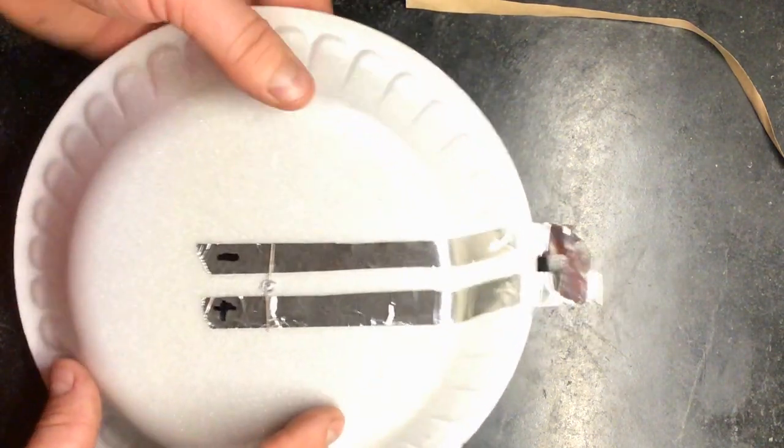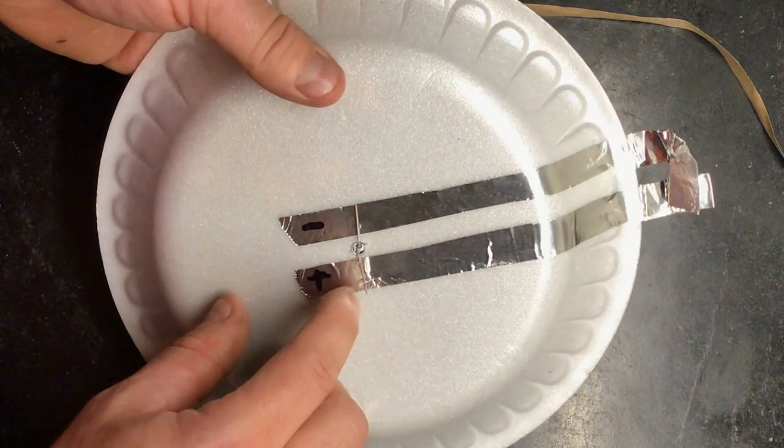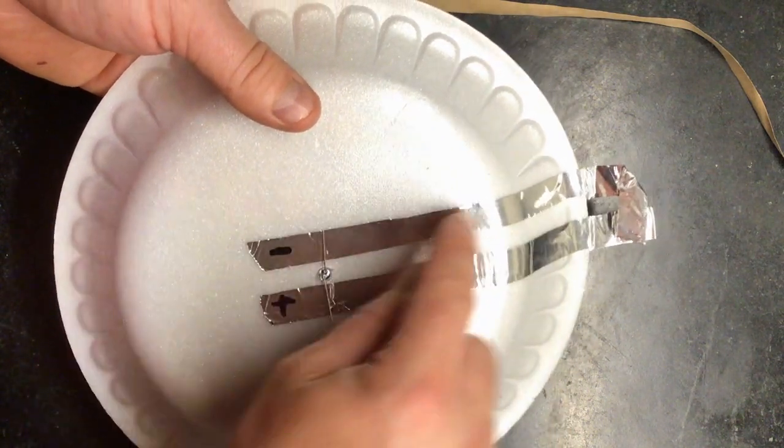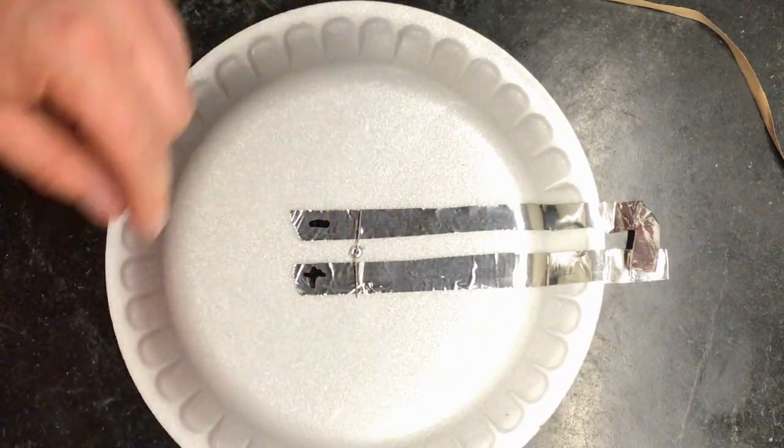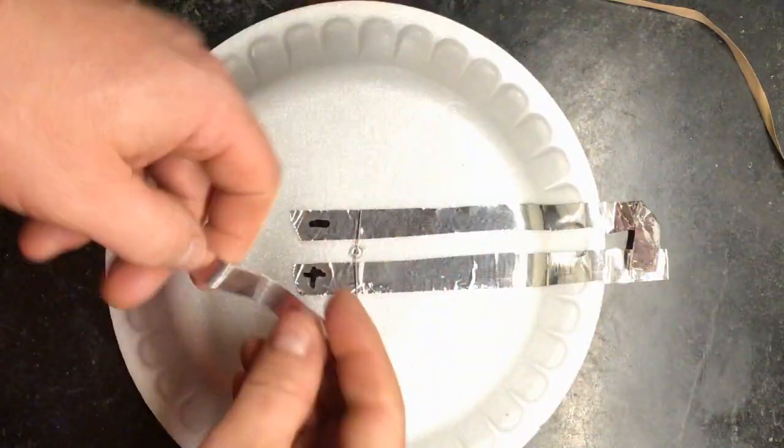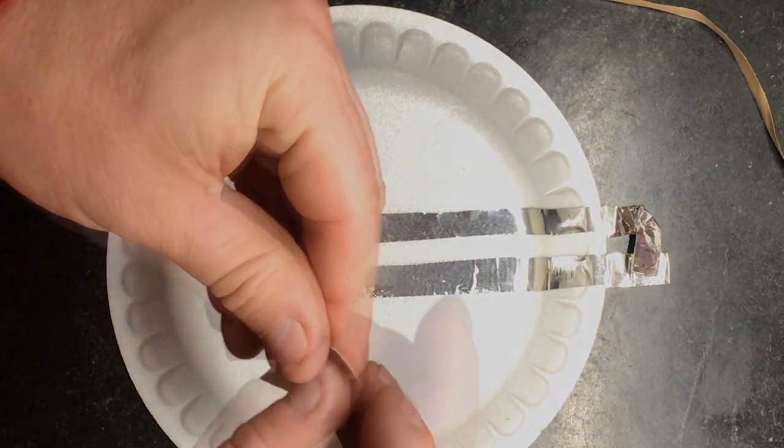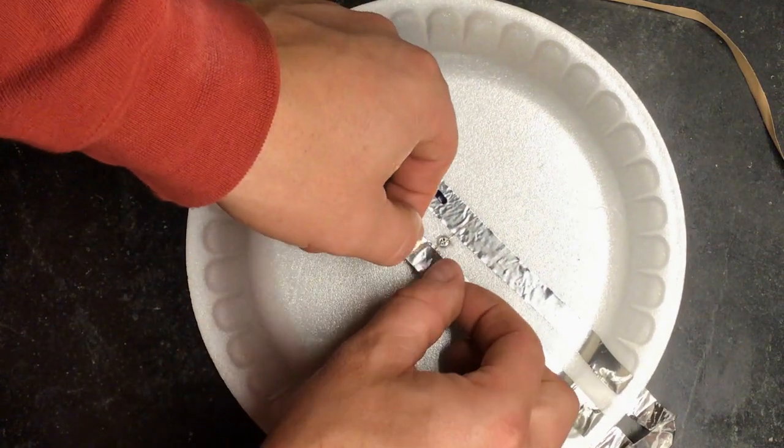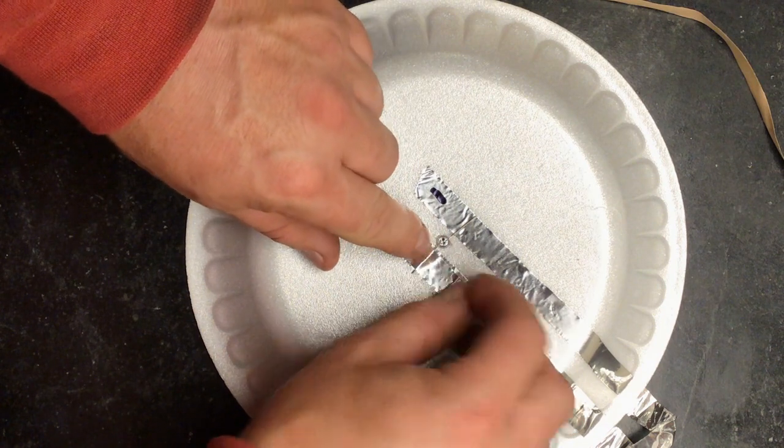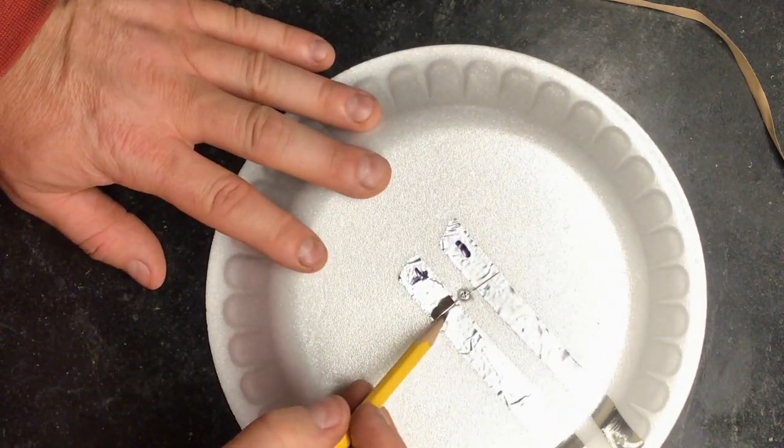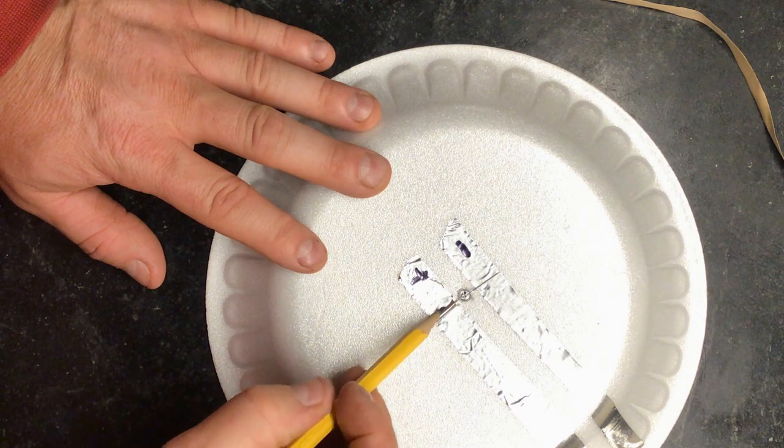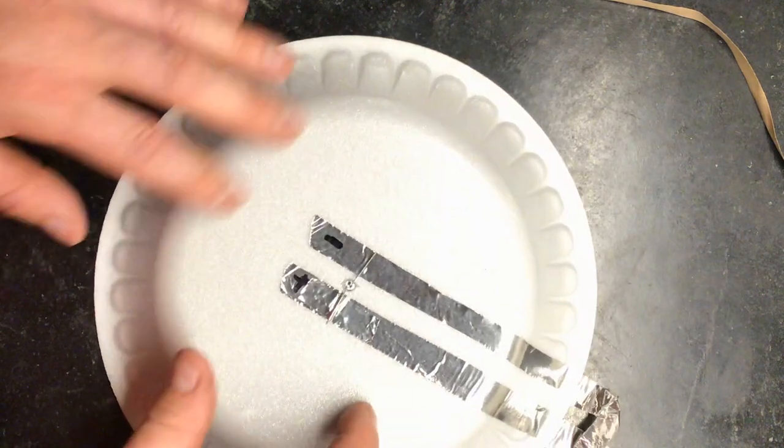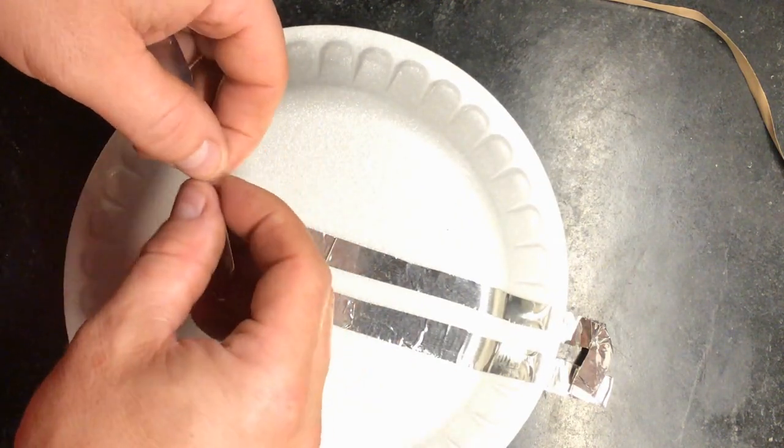you can see here, positive leg is touching the positive strip. The negative leg is touching the negative strip. Now I need to tape those down with another piece of my metal tape. And this piece does not have to be long at all. And I'm going to put the piece of tape right over top. What I like to do is take a pencil then and gently make sure that tape is coming into contact with that positive leg from my LED light bulb. Let's repeat the same on the negative side.